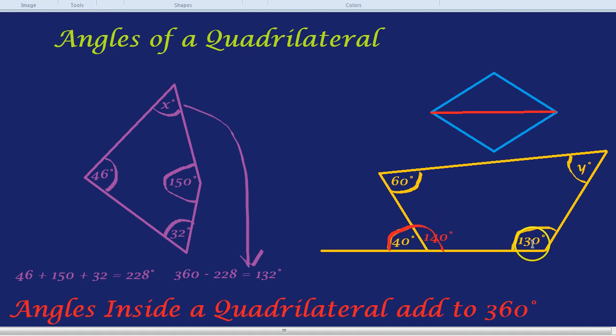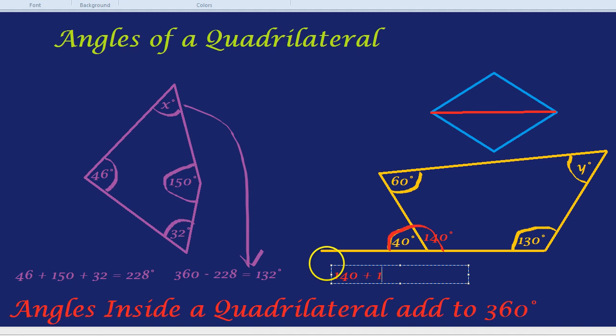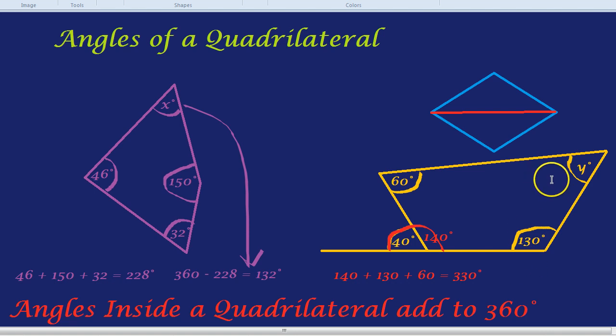Now we have three of the angles inside the quadrilateral, and we know that all four of them have to add up to 360. We can do a little bit of arithmetic. 140 plus 130 plus 60. That would actually be 330 degrees. All four of them inside the quadrilateral add up to 360. So what's left over for Y? Y must be 30 degrees.